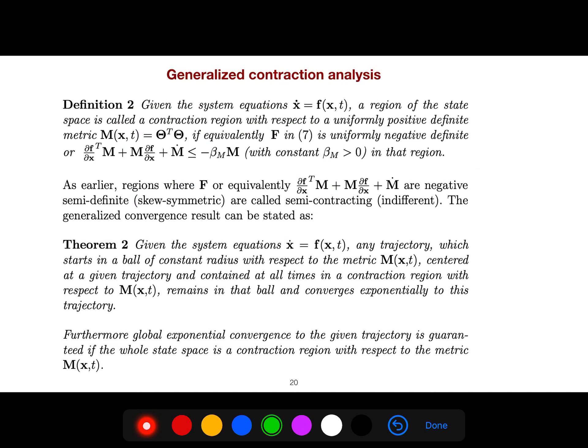We say that a region of state space is called a contraction region with respect to uniformly positive definite matrix. So this is our new metric. If it's uniformly negative definite, it means that this one is satisfied in that region. The theorem says that any trajectory which starts in a ball of constant radius with respect to that metric M, centered at a given trajectory and contained at all times in a contraction region, at all times you are in this region with respect to M, it remains in that ball and converges exponentially to that trajectory.